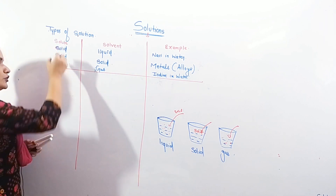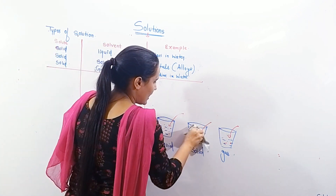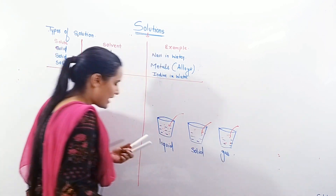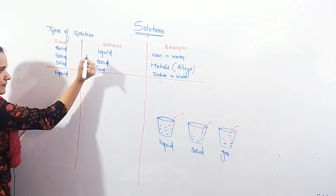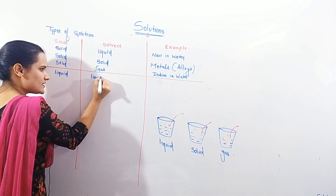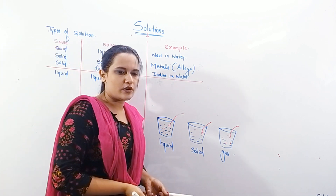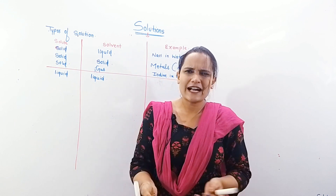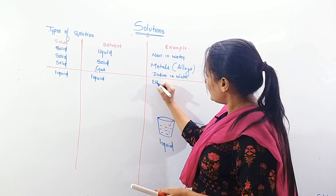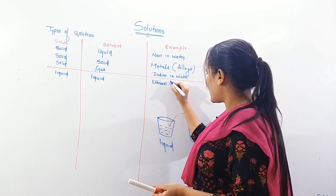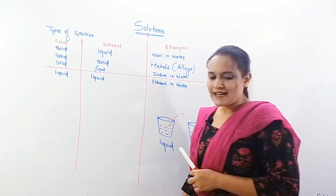Now we will add liquid as the solute into liquid, solid, and gas. For liquid in liquid, examples include adding lemon juice in water, or various fruit juices. A common example is ethanol — alcohol in water — which is an example of liquid in liquid.